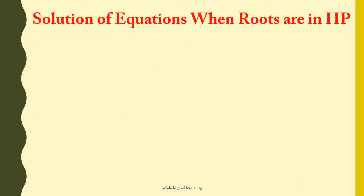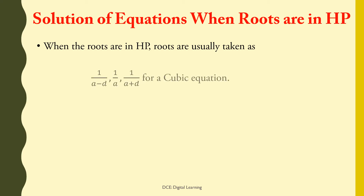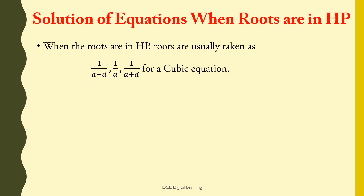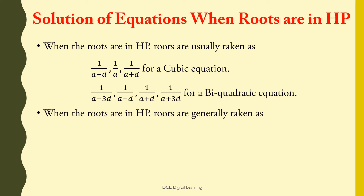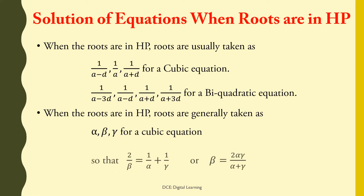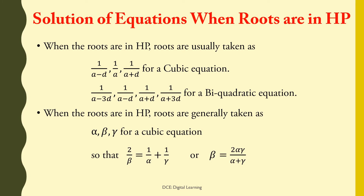Now we will discuss solution of equations when roots are in harmonic progression. When the roots are in HP, roots are usually taken as 1/(a−d), 1/a, 1/(a+d) for a cubic equation, and 1/(a−3d), 1/(a−d), 1/(a+d), 1/(a+3d) for a biquadratic equation. When the roots of a cubic equation are in HP, say alpha, beta, gamma, so that 2/beta = 1/alpha + 1/gamma, or beta = 2·alpha·gamma / (alpha + gamma).